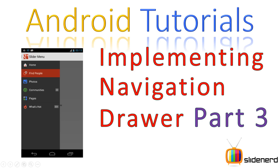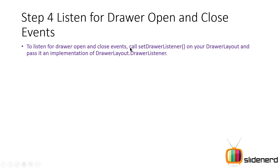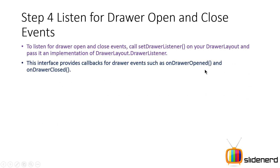So far I have been talking about the navigation drawer — I showed you guys why you need it, what you do with it, and how you can implement it. Here, let's finish this. The first thing to remember is whenever the user opens or closes the drawer, there is an event called OnDrawerOpened or OnDrawerClosed, based on your drawer listener interface, which deals with these events.